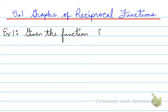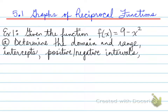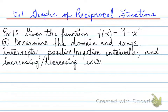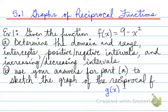Looking at an example, let's say I gave you the parabola 9 minus x squared, and I ask you to determine the domain, range, intercepts, positive and negative intervals, and increasing and decreasing intervals for this function. Once we do that, we're going to use those answers to sketch the graph of the reciprocal function of f. In grade 11, you learned about a reciprocal function that was linear. In this case, we're going to learn how to draw any reciprocal function, whether it be a linear reciprocal or the reciprocal of a parabola.